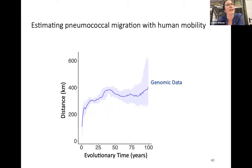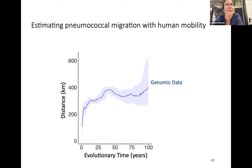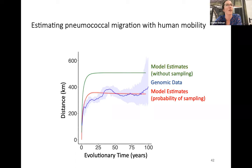Here's the real data. The x-axis shows divergence time — pairs that are 10 years divergent and their mean distance, 25 years divergent and their mean distance. The plateau represents the mean distance between all samples in South Africa. The uncertainty represents uncertainty in our phylogenetic tree, which increases further back in the tree. We recapture this pretty well. Excluding the probability of sampling gives our true model estimates of the rate of spread, plateauing at the mean distance between all locations in South Africa.